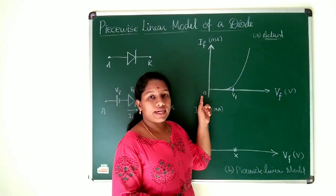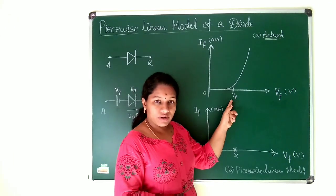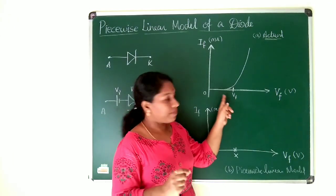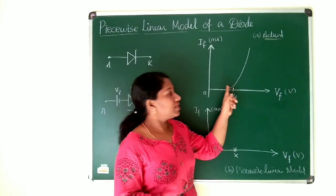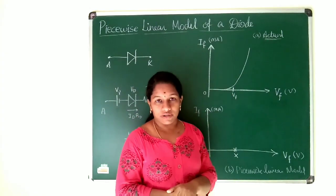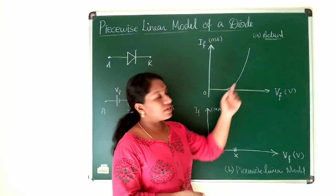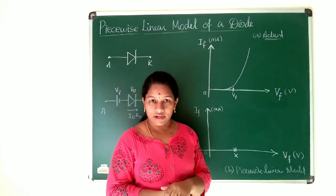When we increase input voltage up to the threshold voltage, current is very small. When we increase beyond threshold voltage, current increases exponentially. If you observe this curve, it shows a non-linear function.